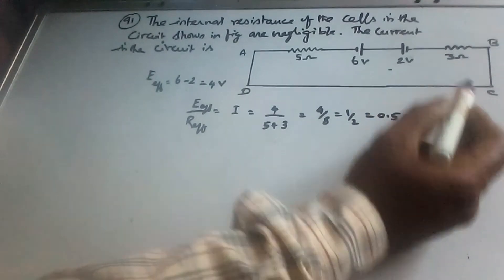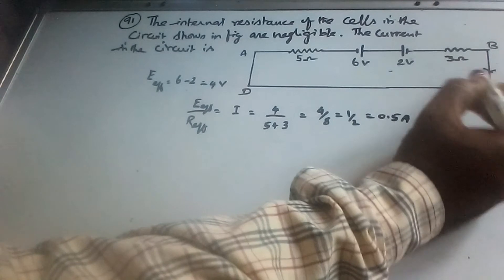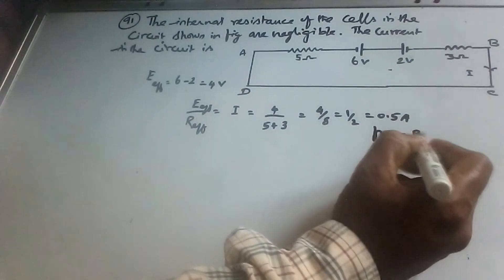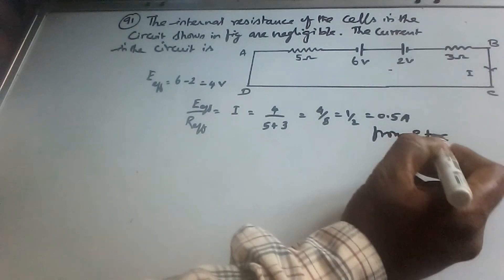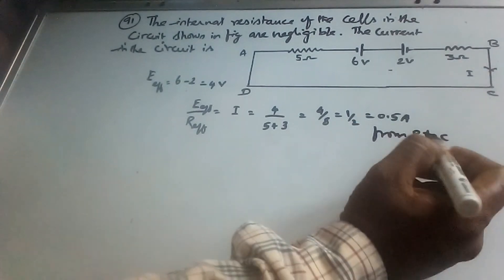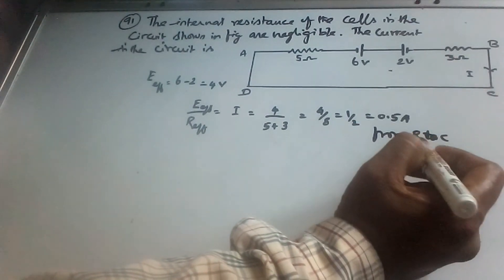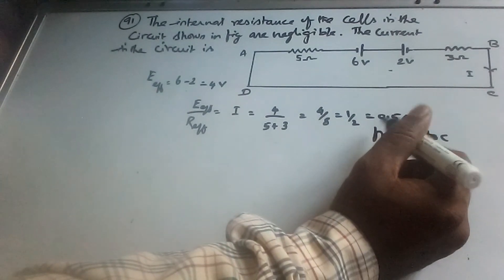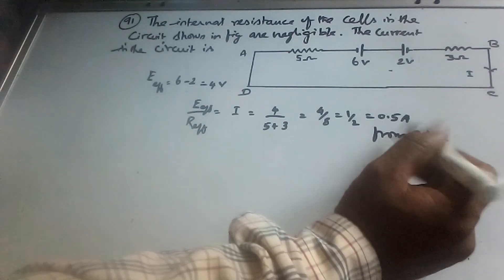The direction of current flow is from B to C. We should mention the direction in our answer.